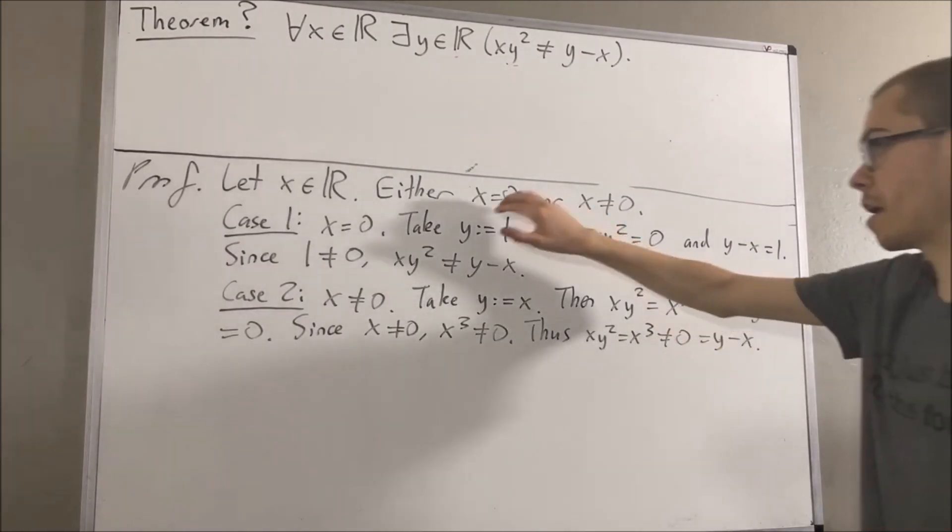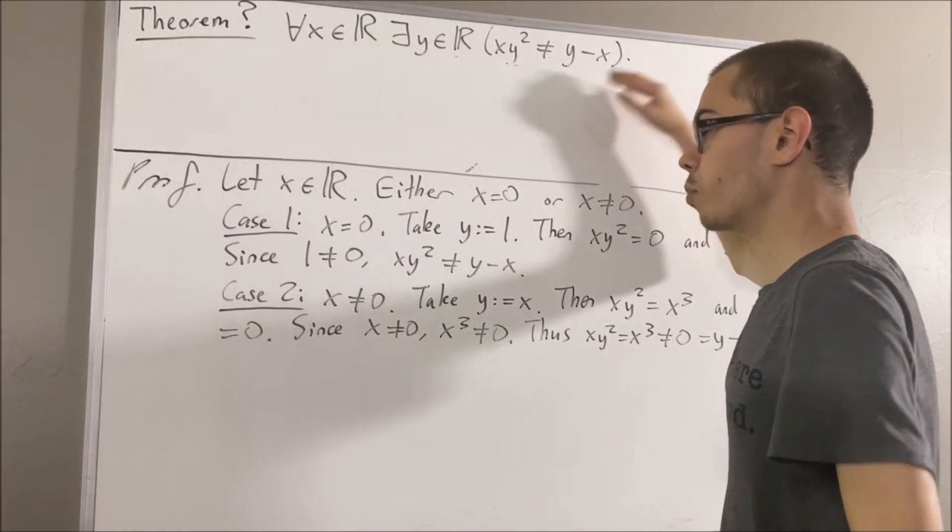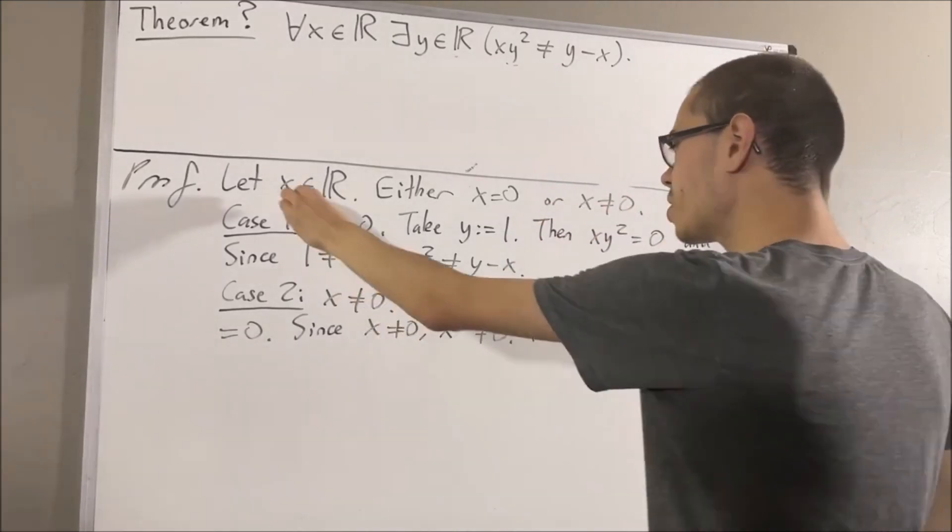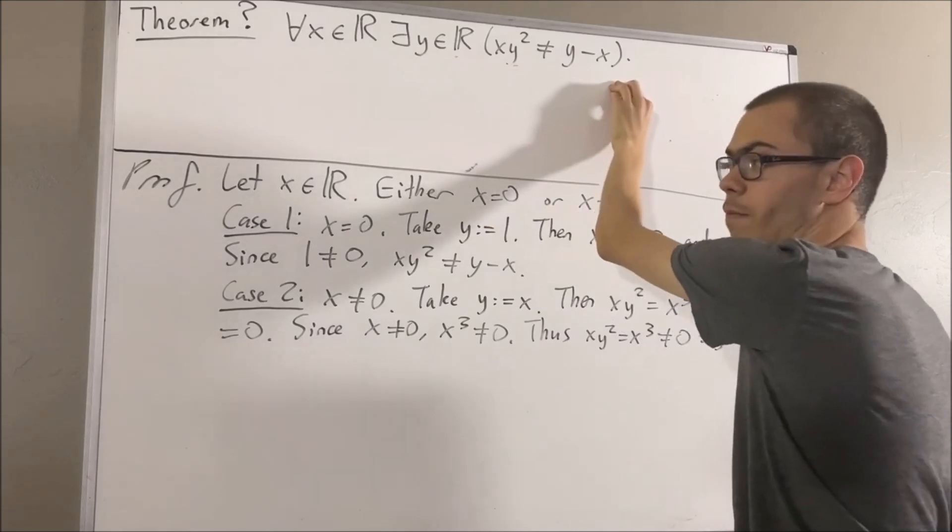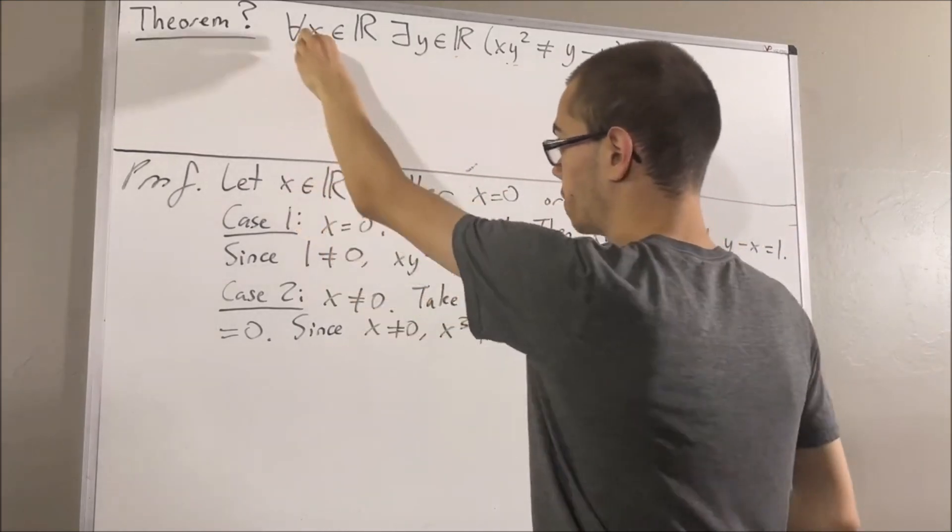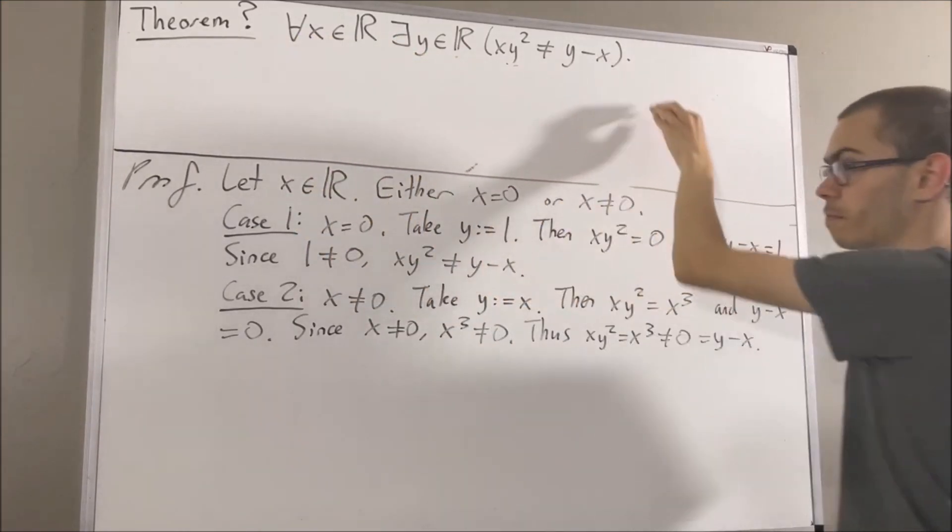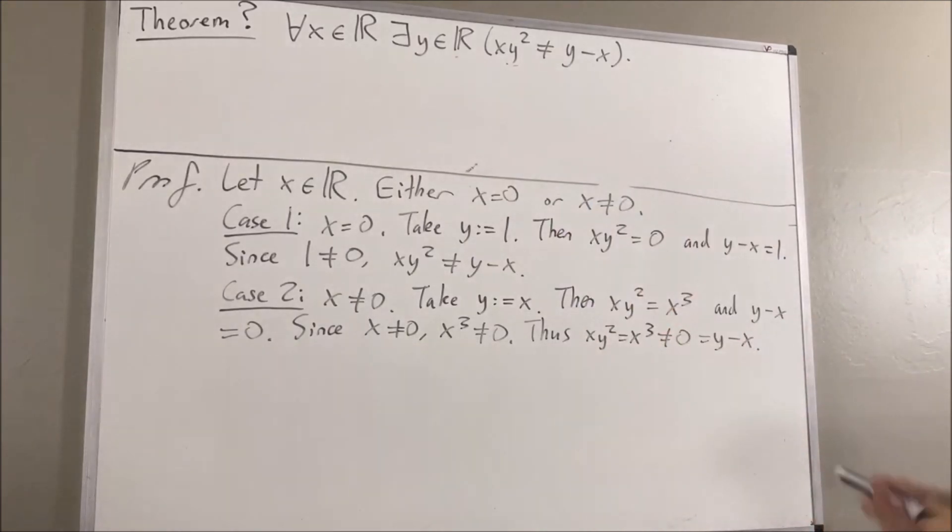So in either case, this is true. So putting this all together, we gave ourselves an arbitrary real number x and showed that this has to be true. Since x is arbitrary, this means for all real numbers x, this is true. And that's exactly what we wanted to prove. So this completes the proof.